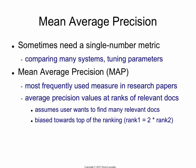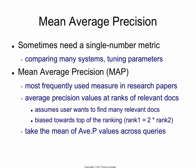Specifically, what happens at rank 1 is twice as important as what happens at rank 2. So getting a relevant document at rank 1 is twice as important as getting a relevant document at rank 2, as far as average precision is concerned.